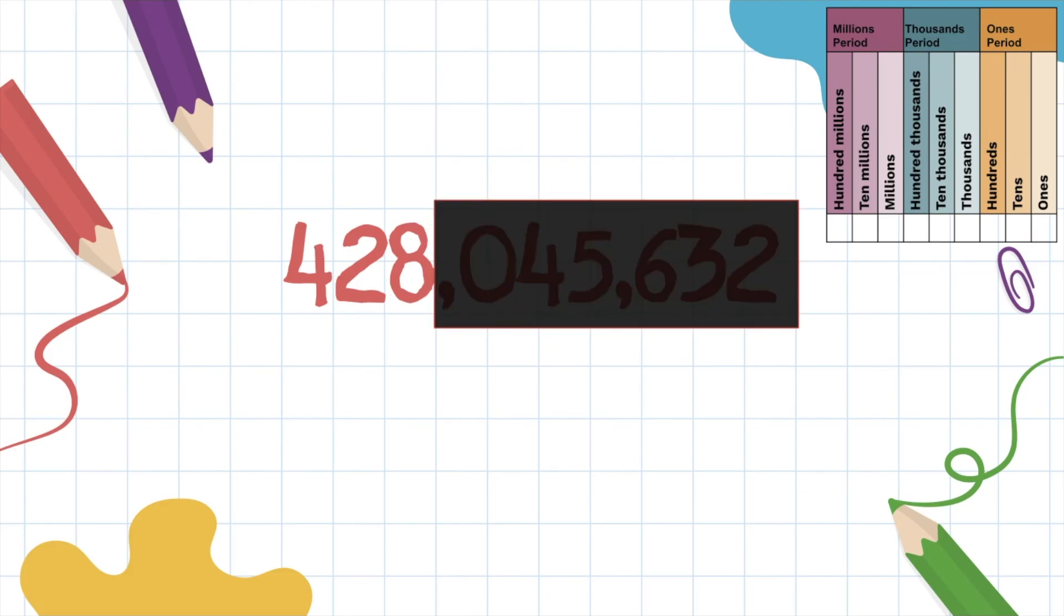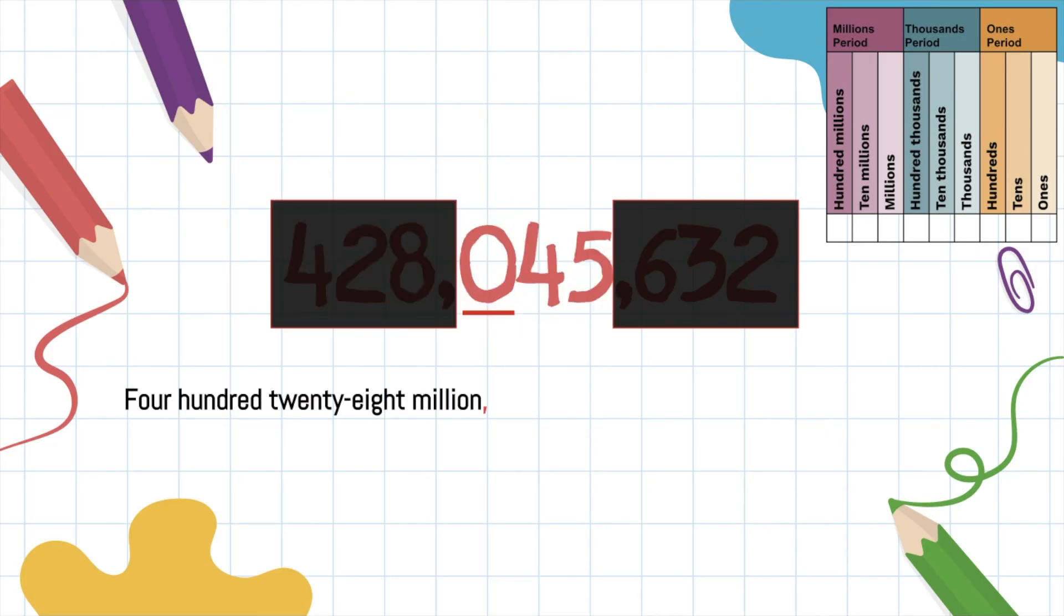I'm going to cover up everything that's not the millions period. First name, 428. Last name, million. Don't forget the comma. No doubt you've noticed the zero here, but don't let this scare you. We need that zero as a placeholder to show that we don't have any hundred thousands. First name, 45. Last name, thousand, because it's in the thousands period.